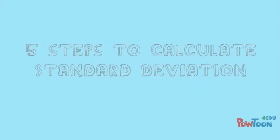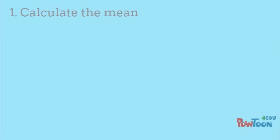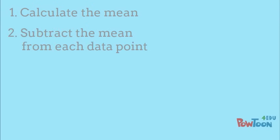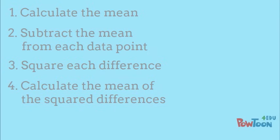To recap, these are the five steps for calculating standard deviation: Calculate the mean, subtract the mean from each data point, square each difference, calculate the mean of the squared differences, and take the square root.